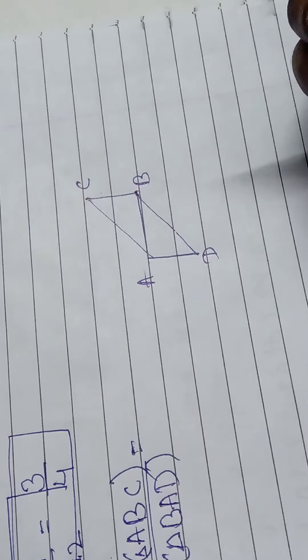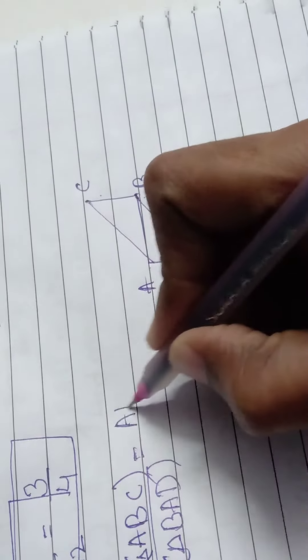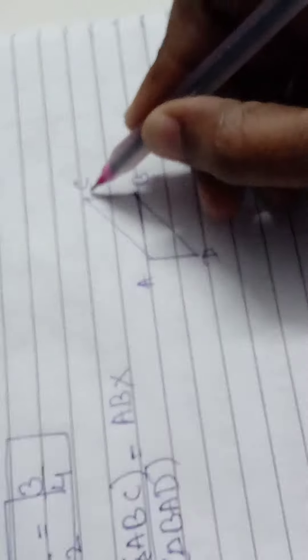What is the formula of area of triangle? Base into height. So what is the base? AB. AB into height is BC. So height is BC.